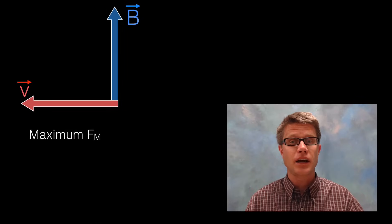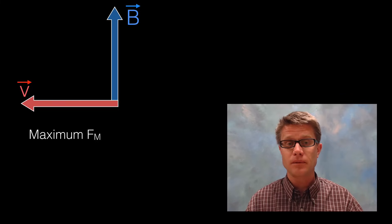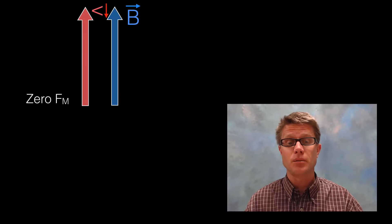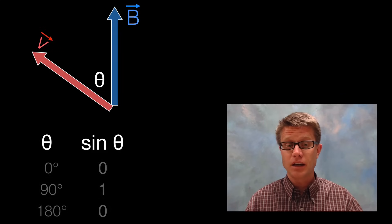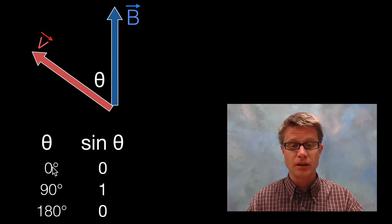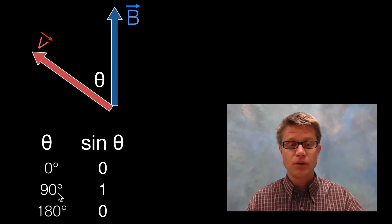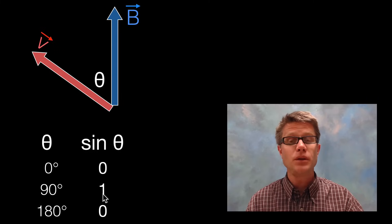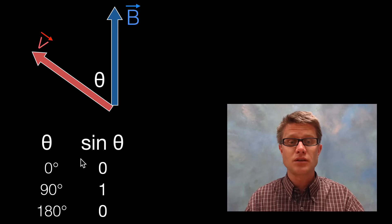Where does the sine of theta come from? If the magnetic field and velocity are perpendicular, that gives the maximum magnetic force. If they're in opposite directions or the same direction, the force is 0. Choosing that angle as theta and using sine theta: sine of 0° is 0, so no magnetic force; sine of 180° is also 0; but at 90° it's 1 — maximum force. The AP folks say you should really understand 0°, 90°, and 180°. At around 45° the sine is about 0.70, somewhere between 0 and 1.